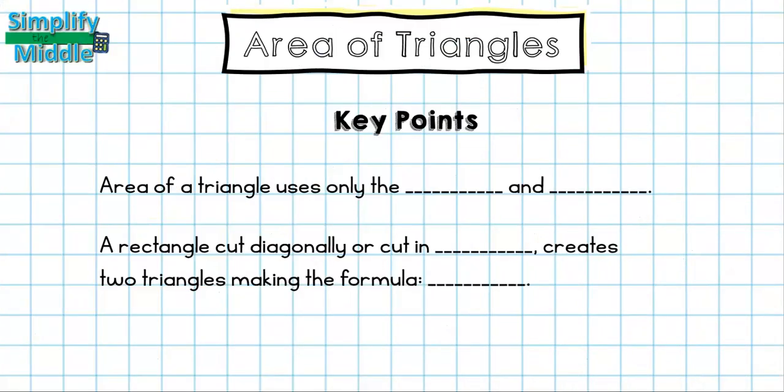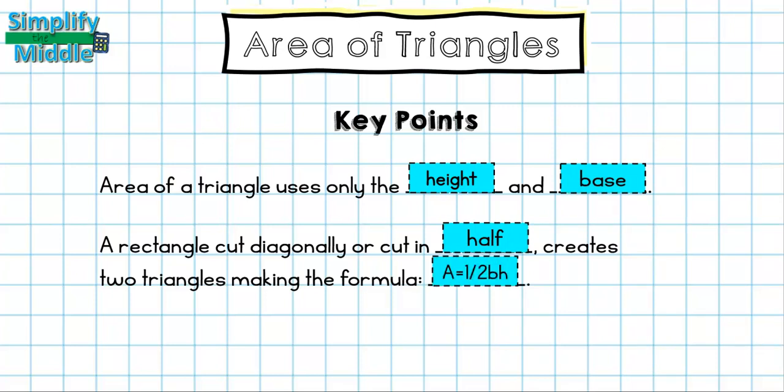Let's recap. Area of a triangle uses only the height and the base. A rectangle cut diagonally, or cut in half, creates two triangles, making the formula area equals one half base times height.